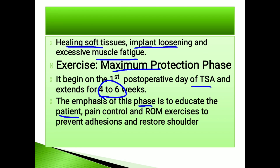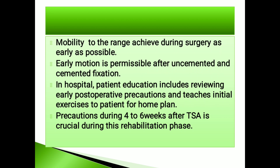The goals of the maximum protection phase include: educating the patient, controlling pain, performing range of motion exercises to prevent adhesions and restore shoulder mobility to the range achieved during surgery as early as possible. Early motion is permissible after both uncemented and cemented fixation. In-hospital patient education involves reviewing early post-operative precautions and teaching initial exercises for a home plan. Precautions during four to six weeks after TSA are crucial during this rehabilitation phase.